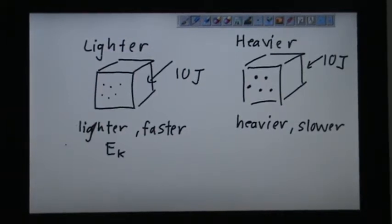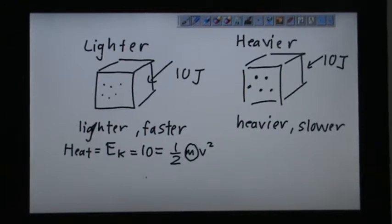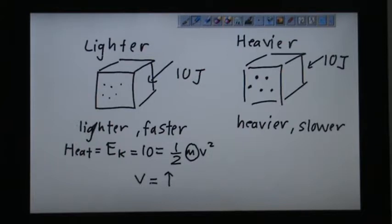You see, the heat energy is giving the energy to kinetic energy. So it's 10. And you have half mv squared. Because this is small, so the v is actually having larger value. If you do some calculation on your own.